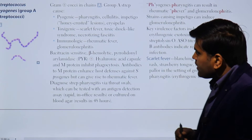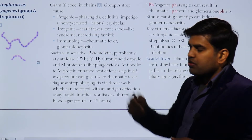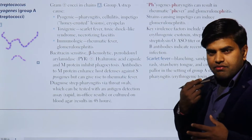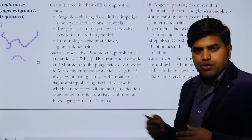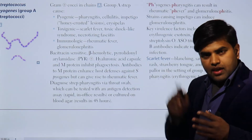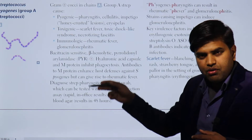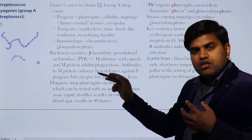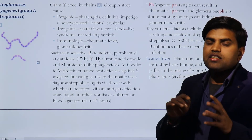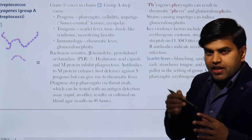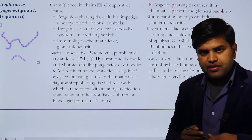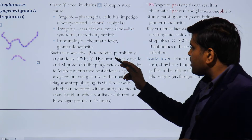Streptococcus pyogenes also causes immunological diseases: rheumatic fever and glomerulonephritis. After pharyngitis infection, two to three weeks later the patient may develop rheumatic heart disease and post-streptococcal glomerulonephritis. This is due to immunological mimicry. The M protein of this Streptococcus mimics cardiac cells, so the antibody formed against the M protein also attacks the heart and kidney cells, causing antigen-antibody reaction and immunological disease.